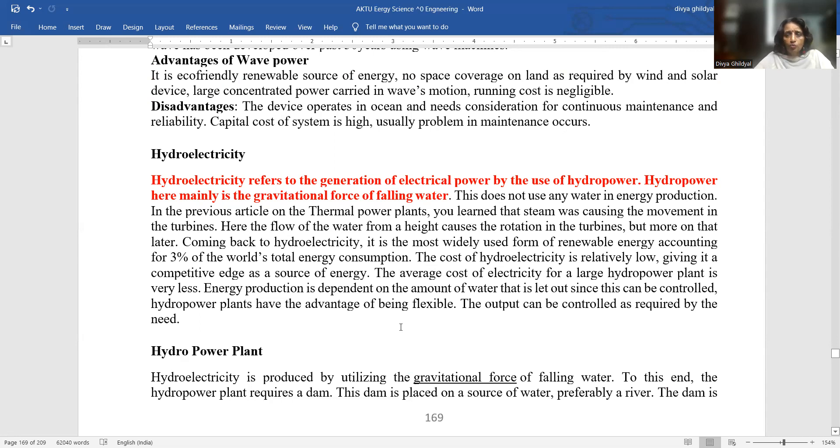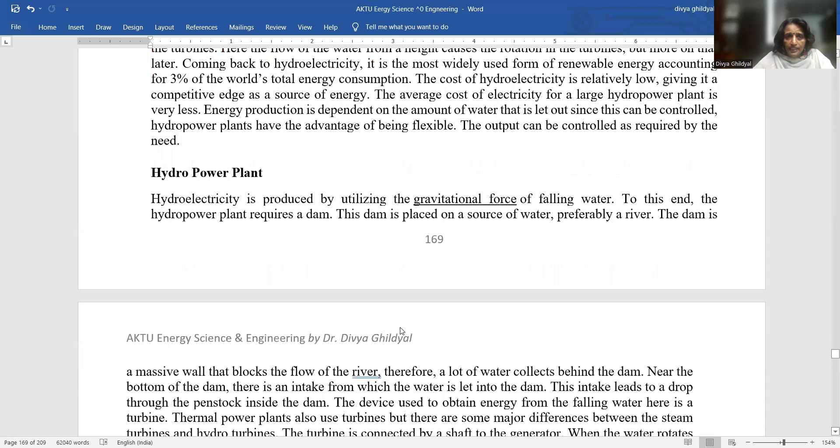This does not use any water in energy production, but it is using hydroelectricity, which is the most widely used form of renewable energy accounting for 3% of the world's total energy consumption. The cost of hydroelectricity is relatively low, giving it a competitive edge as a source of energy. The output can be controlled as required by the need.